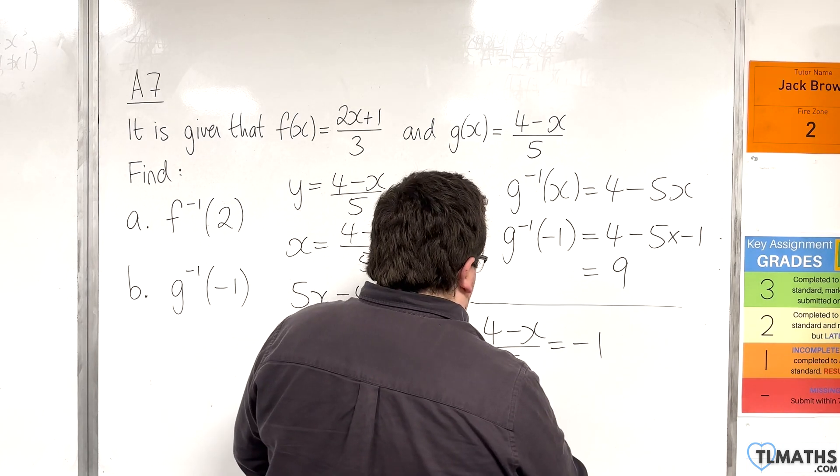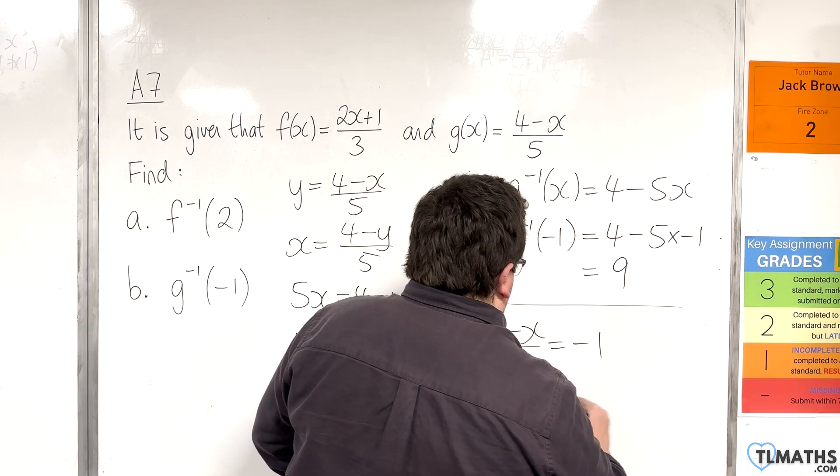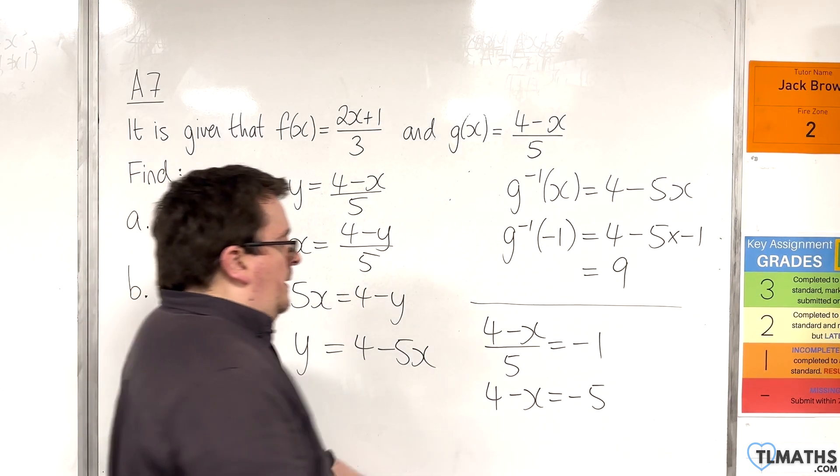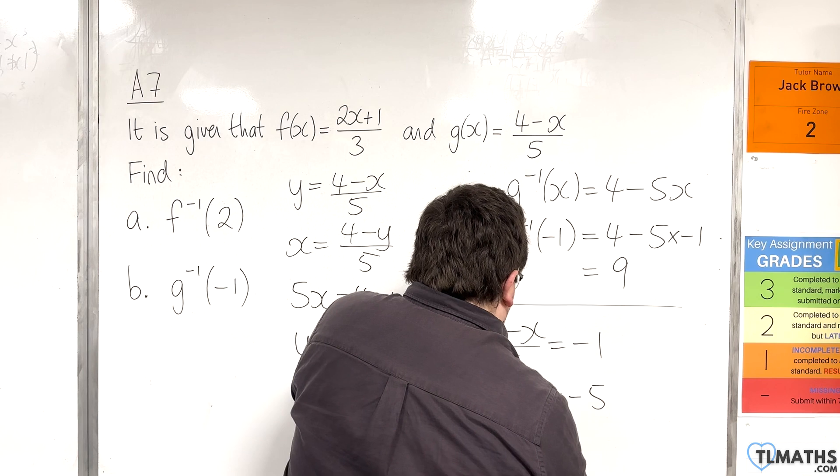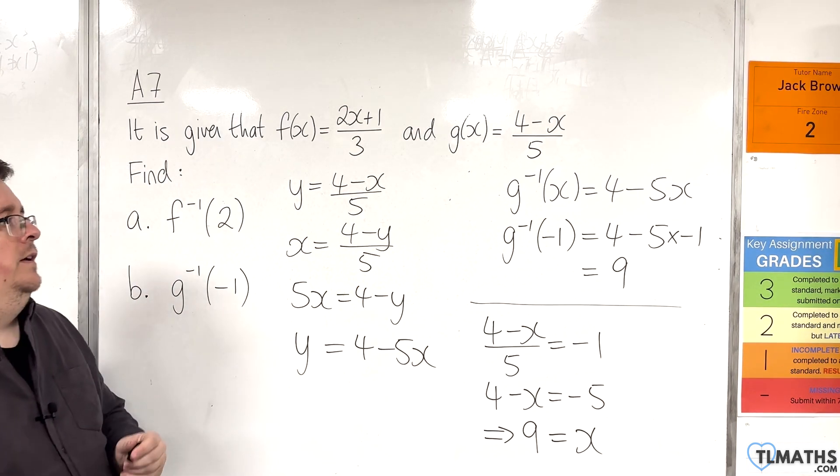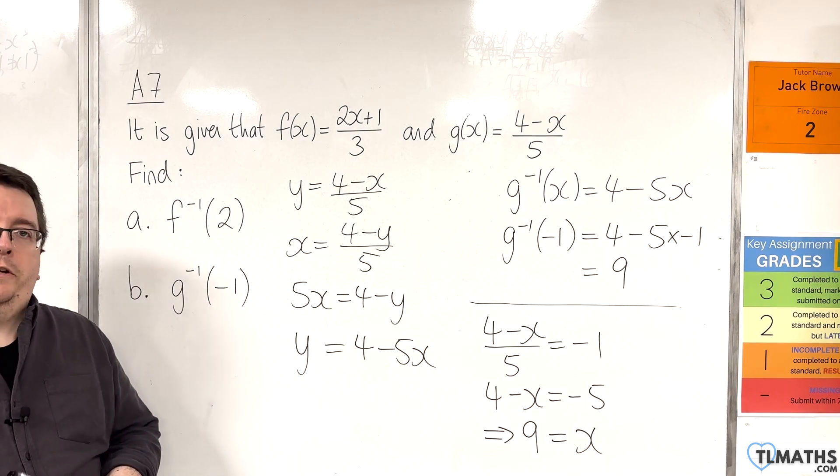If I multiply through by 5, I get 4 take away x is minus 5. And then, if I add 5 to both sides, and add x to both sides, I get x equals 9. Which is precisely what I was looking for.